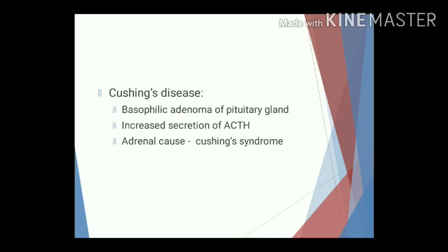Another disorder due to hypersecretion of anterior pituitary hormone is Cushing's disease, which involves a basophilic adenoma of the pituitary gland. There is increased secretion of ACTH, resulting in increased secretion of glucocorticoids. When the cause is pituitary, the condition is called Cushing's disease; when the cause is adrenal, it is called Cushing's syndrome.